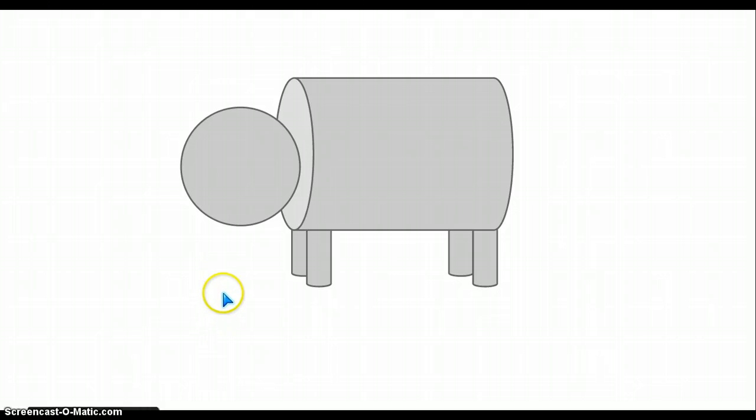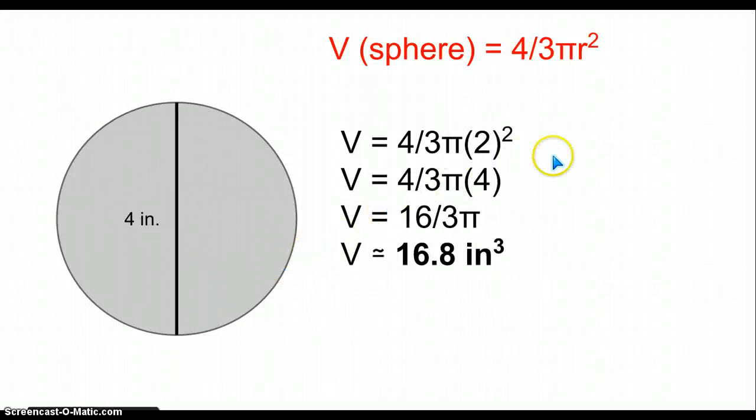So to start off, we're going to find the volume, which is probably the easiest of the two. First we find the volume of the head, which is a sphere, and that would be around 16.8 inches cubed. And we have to remember that the volume of anything is going to end up with cubed inches or feet or whatever units you're using.